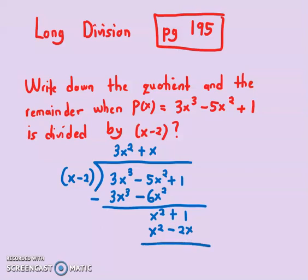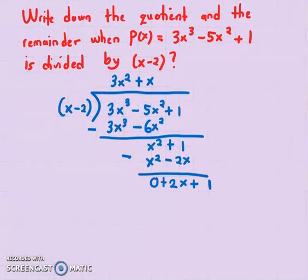That gives me now subtract: it will give me 0, 1 + 2x. So you have 1 + 2x, or 2x + 1. Now to cancel out 2x, I need to multiply by 2. This will give me 2 times x is 2x, 2 times -2 is -4.